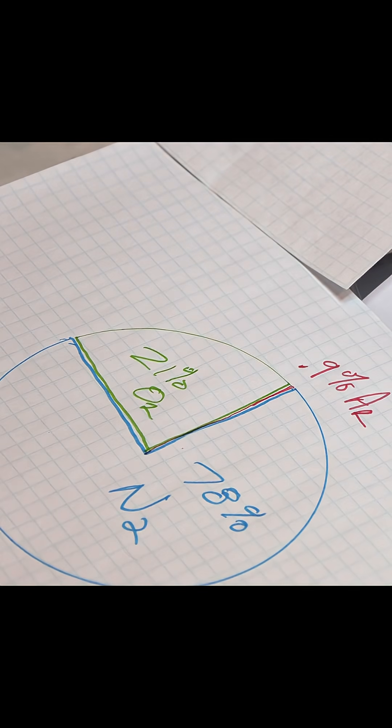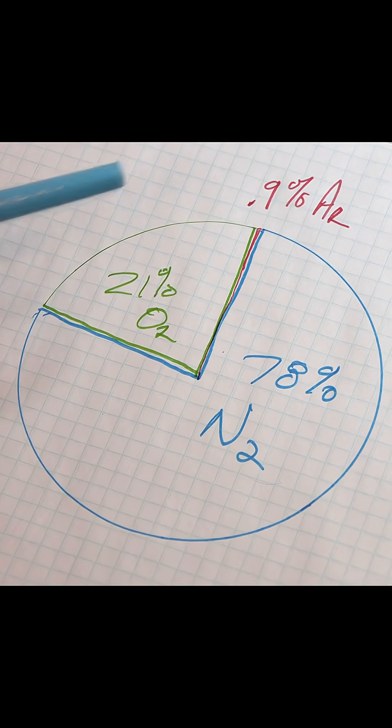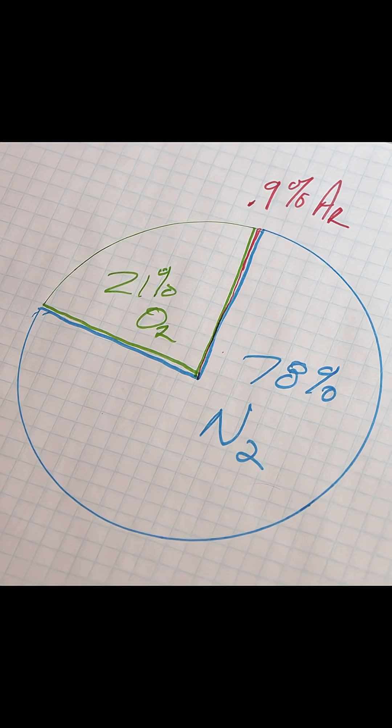About 0.9% argon and other trace gases. So this is our atmosphere: 78% nitrogen, 21% oxygen, less than 1% argon. That's what we breathe.